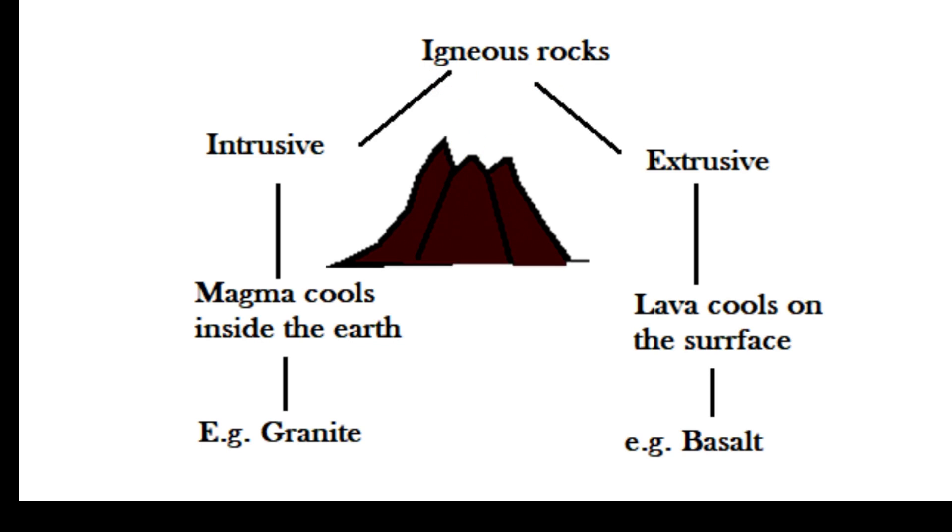The difference between magma and lava is basically location. Magma is the name given to the molten material when it's beneath the surface and lava when it reaches the surface.